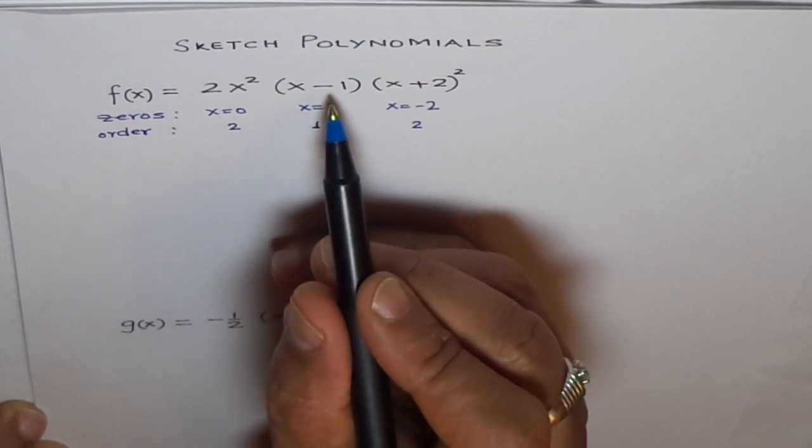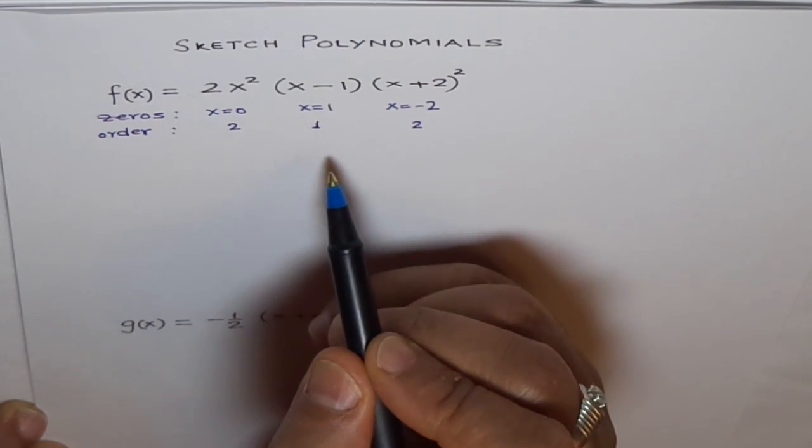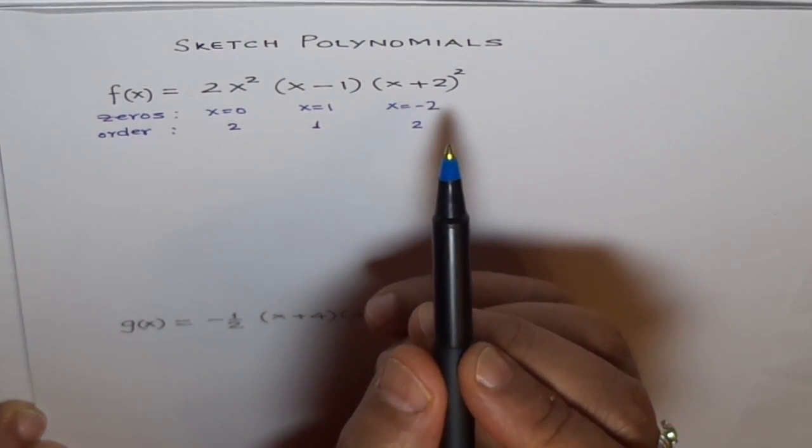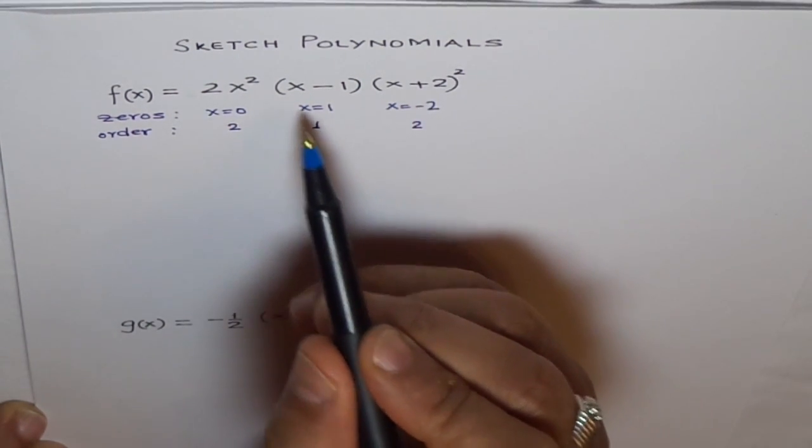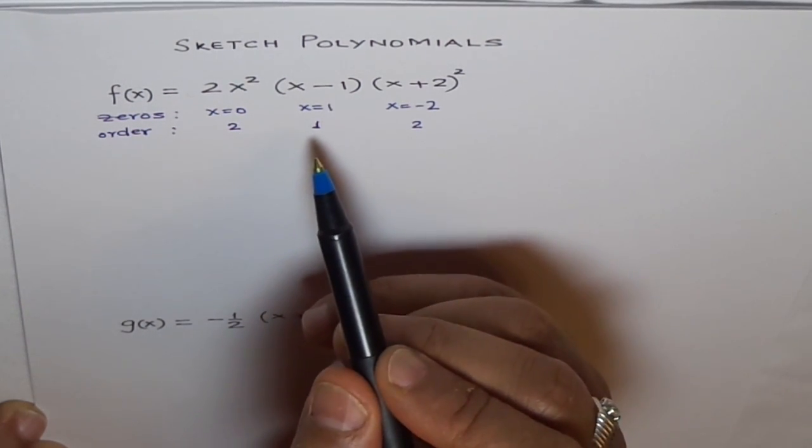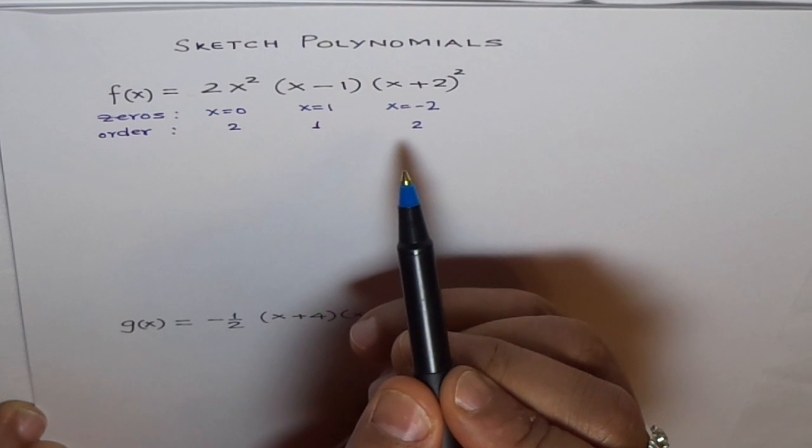In this case, we will see that when we draw a graph at x equals 1, the graph will cross through the x-axis. But at these two zeros, it will bounce back.